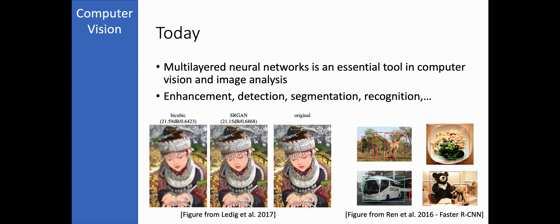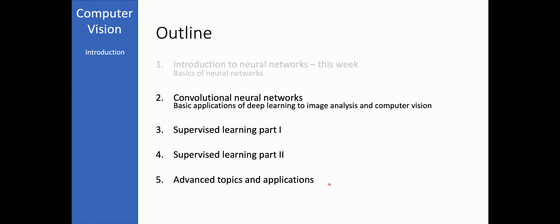Neural networks — multi-layered neural networks — are an essential component in computer vision and image analysis, used in various tasks: enhancement, detection, segmentation, recognition, and many more. Last week we talked about the introduction. This week we will talk about convolutional neural networks. We will study the basic application of deep learning to image analysis and computer vision, and the next three weeks we will go even deeper into this topic.